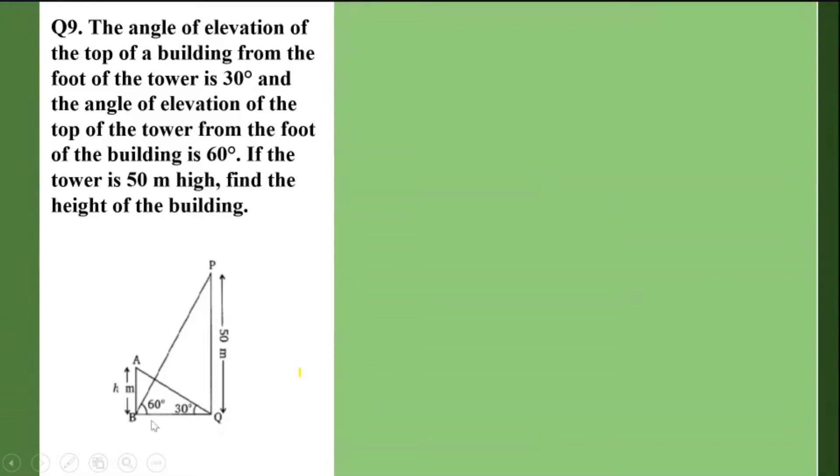And the angle of elevation of the top of the tower, now 60 degrees has to be a bigger angle compared to 30 degrees. That means 50 meters will be a bigger height compared to the height of the building AB. So let us write down what is given to us.